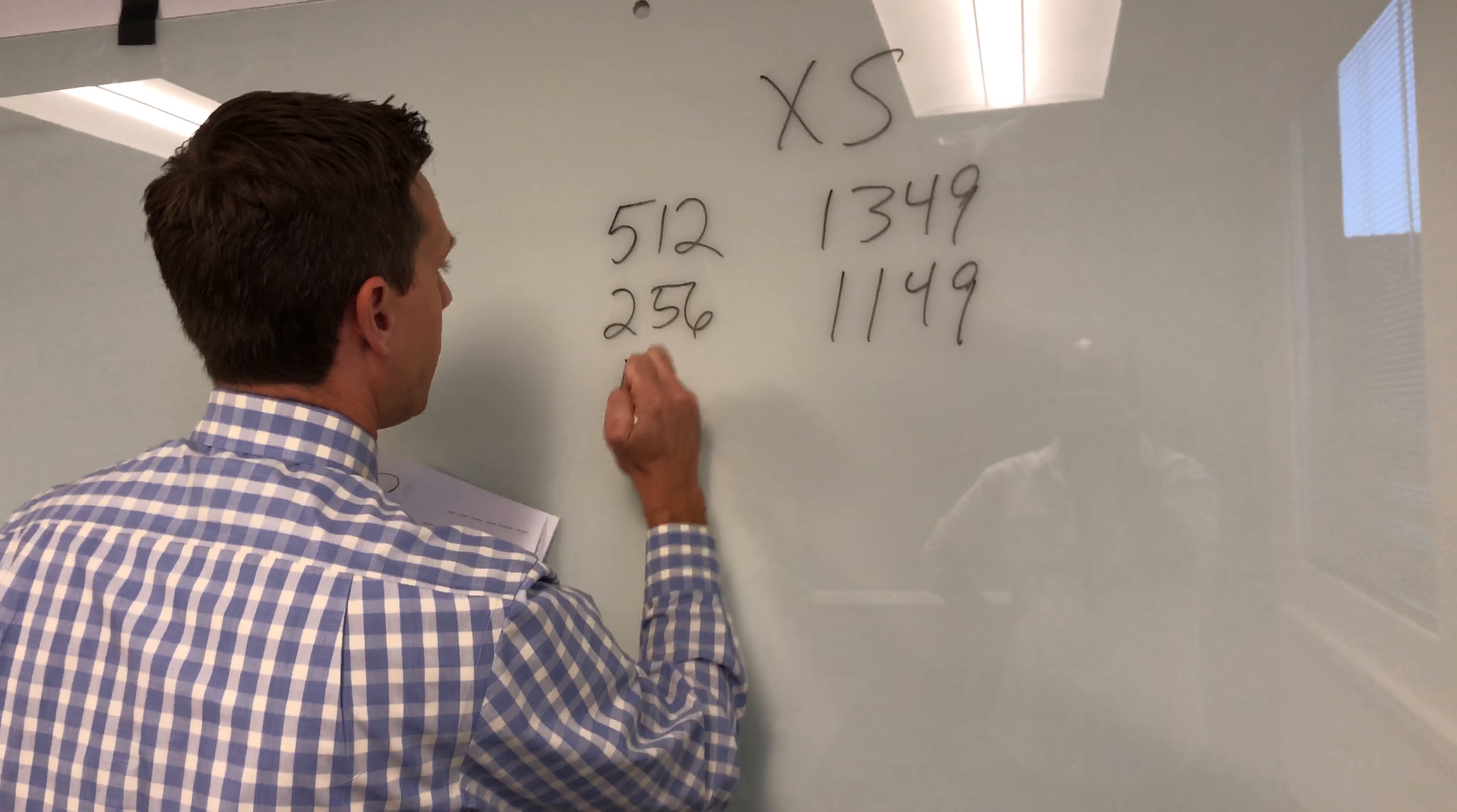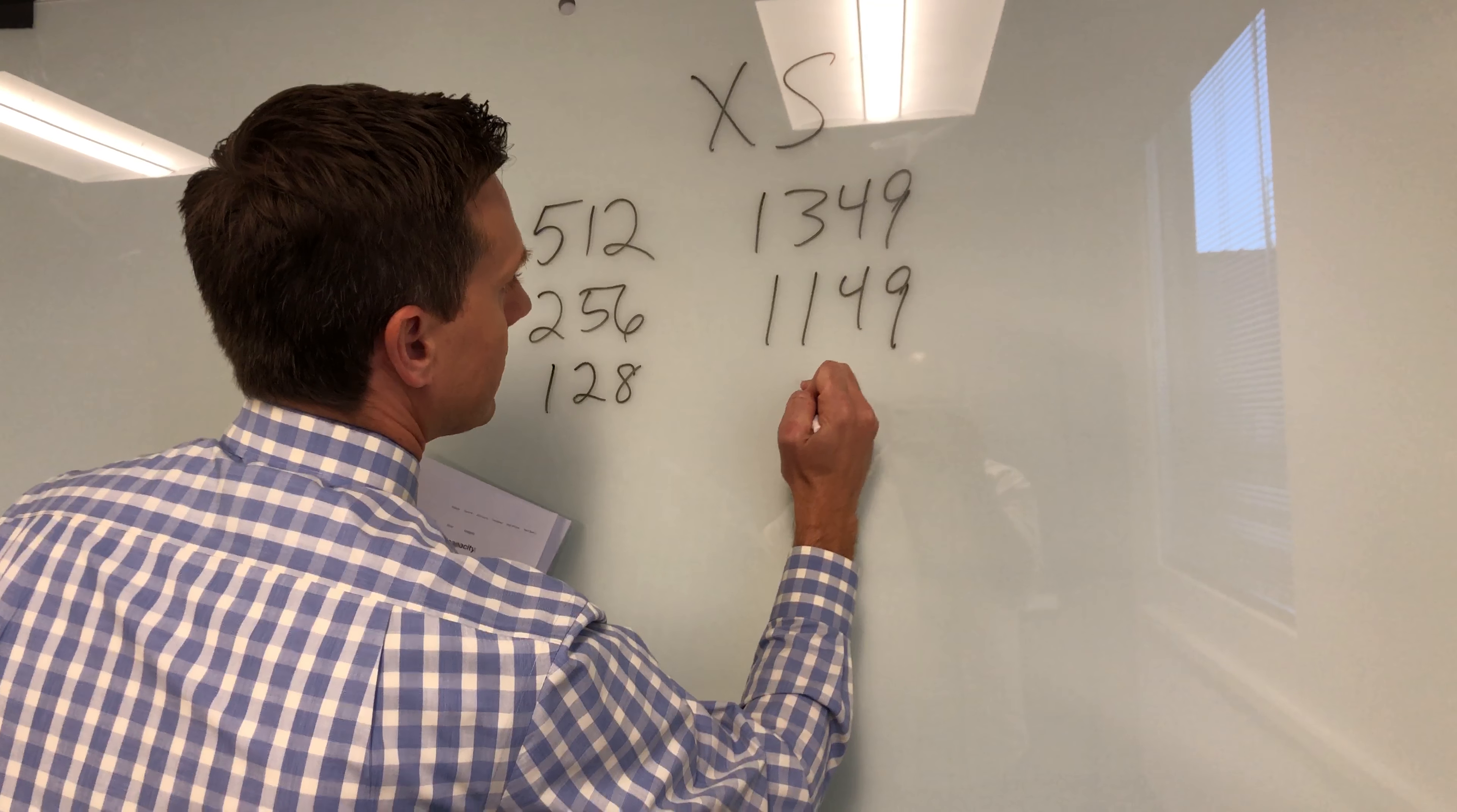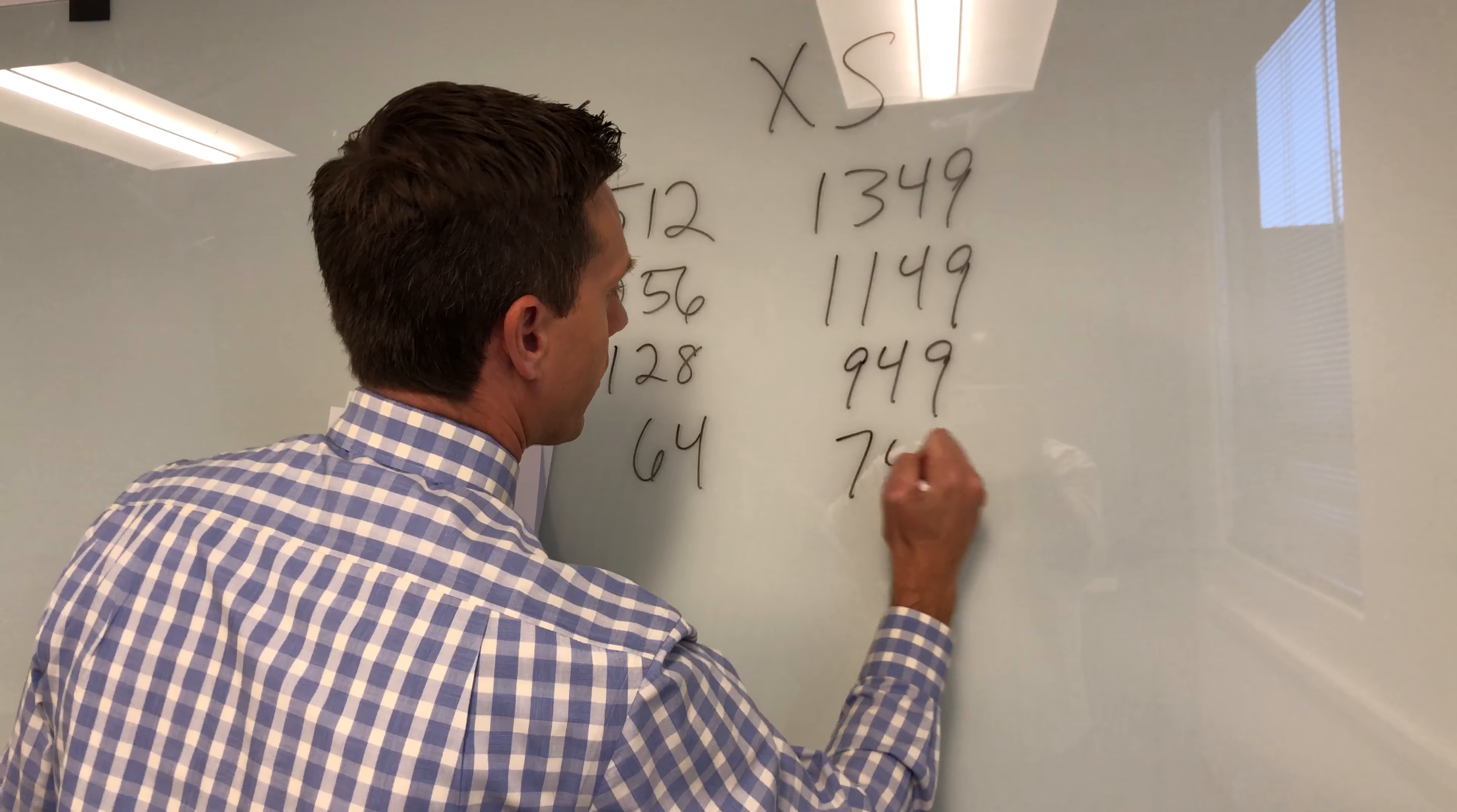128 gigs, that would be $949. And then we've got 64 gigs, and that would be $749.